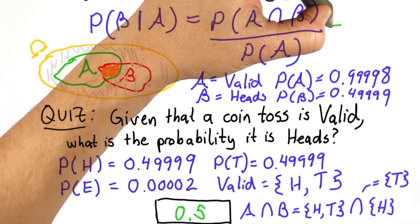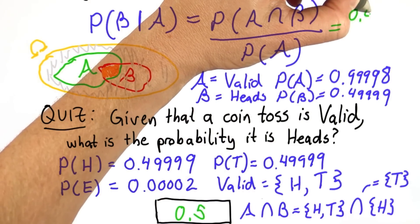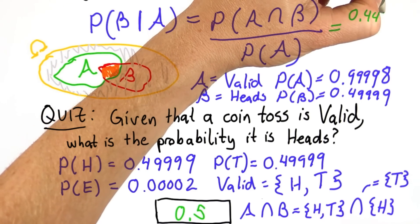Using the formula, we have the probability of tails, which is 0.4999, which is the probability of A intersect B.